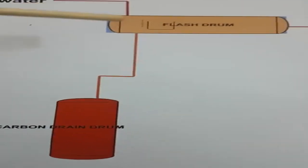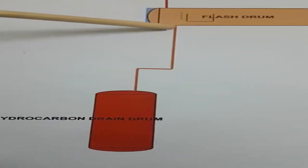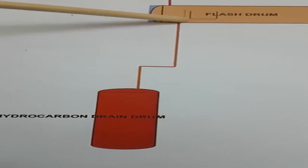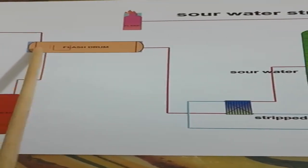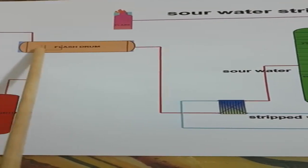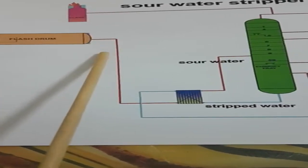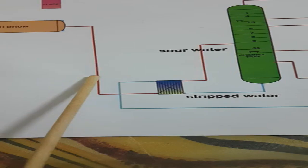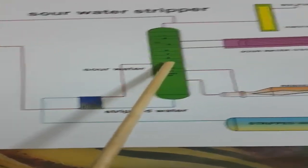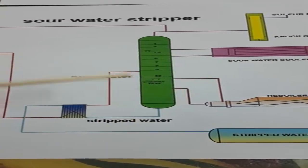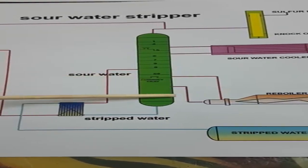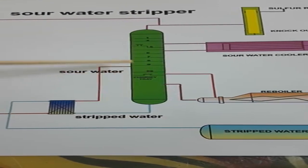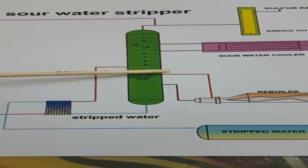The hydrocarbon drain drum collects the hydrocarbons removed in the flash drum by the coalescence filter or decantation method. To summarize the flow: we receive sour water in the flash drum from different sources, then pump it to the stripper. In the stripper, hydrogen sulfide rises to the top and strip water collects at the bottom. Steam is used to heat the sour water in the reboiler, and the separated gas goes up while strip water is collected at the bottom.